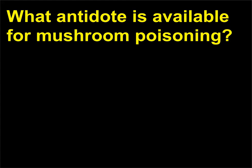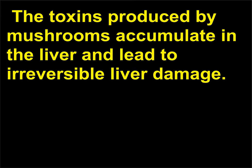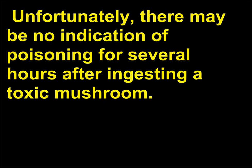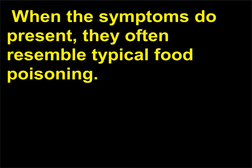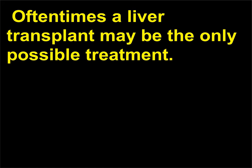What antidote is available for mushroom poisoning? No effective antidote for human poisoning by mushrooms has been discovered. The toxins produced by mushrooms accumulate in the liver and lead to irreversible liver damage. Unfortunately, there may be no indication of poisoning for several hours after ingesting a toxic mushroom. When the symptoms do present, they often resemble typical food poisoning. Liver failure becomes apparent 3 to 6 days after ingesting the poisonous mushroom. Often a liver transplant may be the only possible treatment.